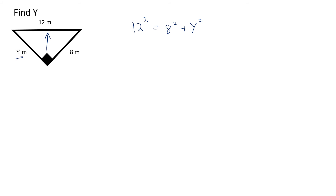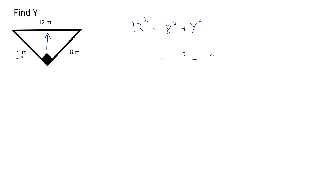The problem sometimes comes if you incorrectly set up the formula as y squared equals 12 squared plus 8 squared. If you do that, you will definitely end up with the wrong answer, because y is not the hypotenuse. The hypotenuse squared equals the sum of the other two sides — not just any side.